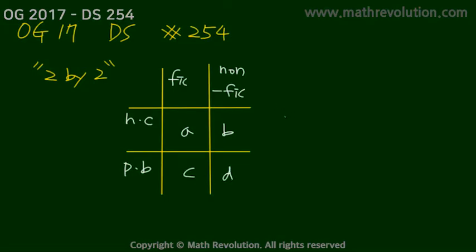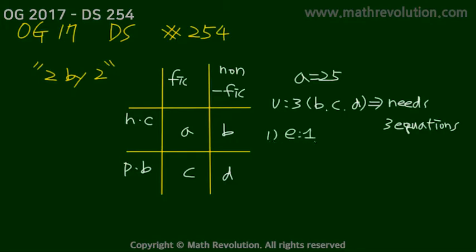Now it says 25 of the books were hardcover fictions, so we get A equals 25, and we have three variables: B, C, and D. To solve this problem, we will need three equations. We need to match the number of variables with the number of equations. We know that each option gives us one equation each, 1 and 2. We're still one short of three, so chances are E is our answer choice.